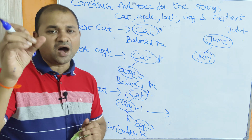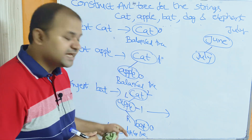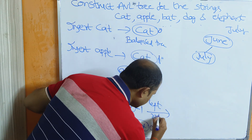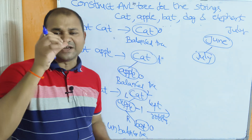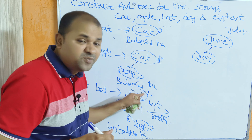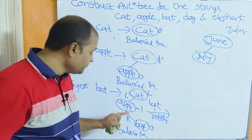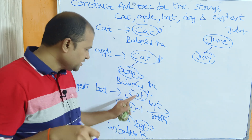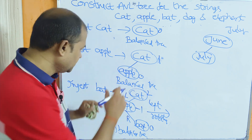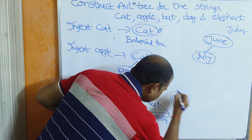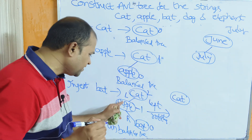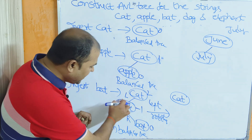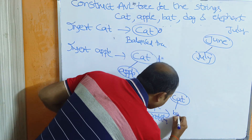LL and RR are single rotations, whereas LR and RL are double rotations. For the first rotation in LR, it is NOT performed on the unbalanced node but on the unbalanced node's child. The second rotation is performed on the unbalanced node itself. So cat remains as is; first we perform a left rotation on cat's child, apple. Apple will be rotated to the left.